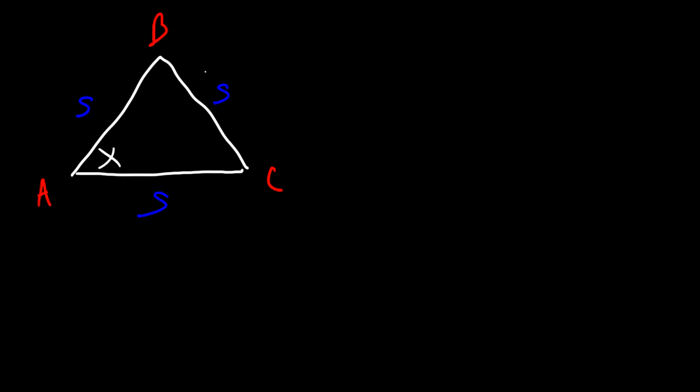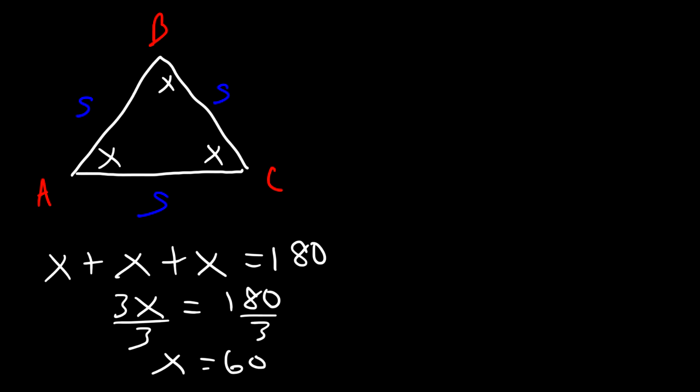So let's call it x. The three angles of a triangle have to add up to 180. So x plus x plus x is 3x. And if we divide by 3, we can see that x is 60. So therefore each angle in an equilateral triangle has a measure of 60 degrees.